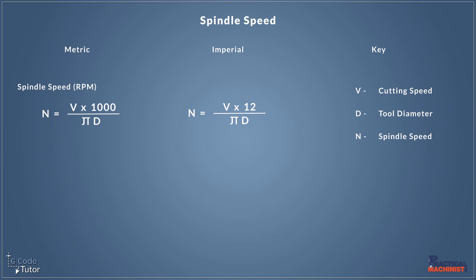So here's the key. This is where we know what all these letters represent. So V is our cutting speed, D is our tool diameter, and N, our answer, is our spindle speed and revolutions per minute. So let's talk a little bit about this V, cutting speed.